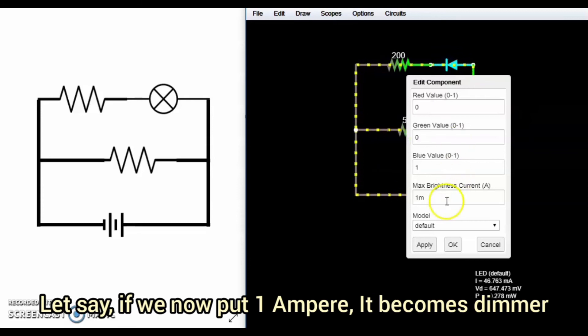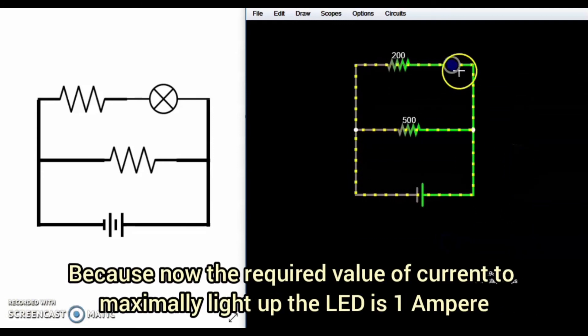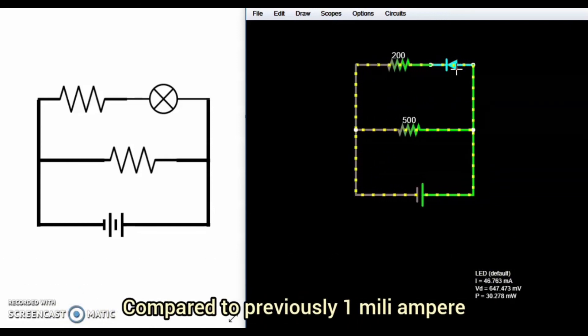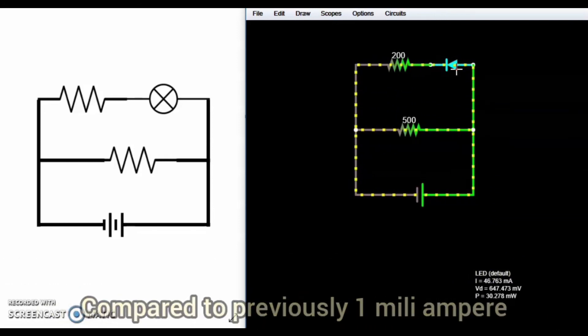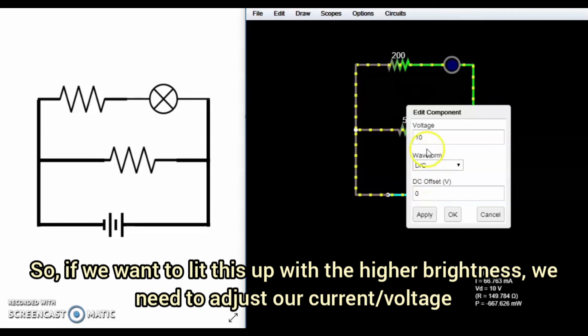Let's say, if we put now 1 ampere, what happens? It becomes dimmer. Because now, the required value of current to maximally light up the LED is 1 ampere, compared to previously, 0.001 ampere. So if we want to light this up with higher brightness, we need to adjust our voltage.